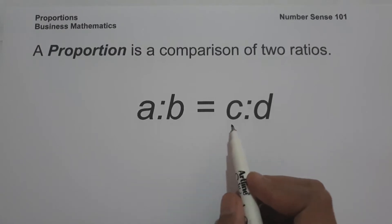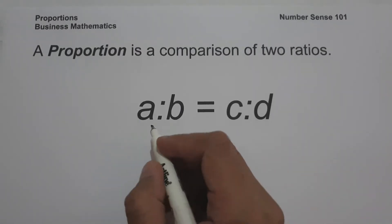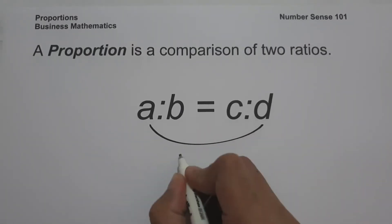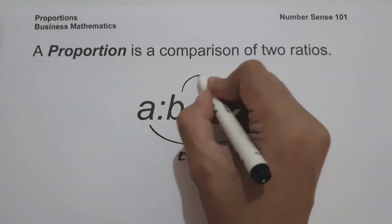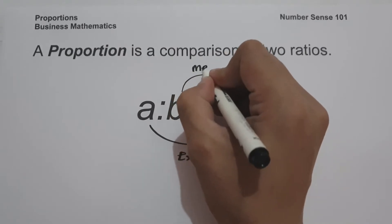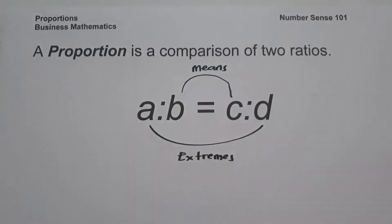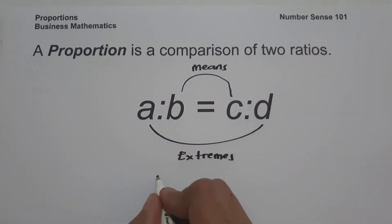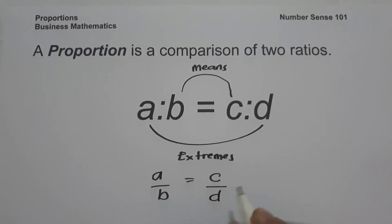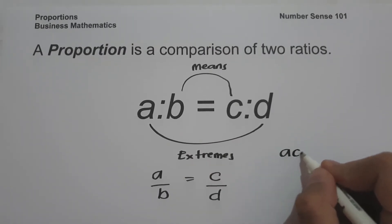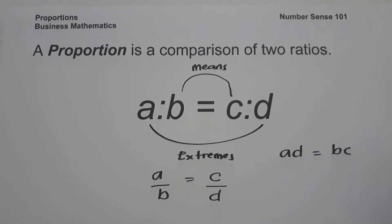The outer term is what we call the extremes, and the inner term is what we call the means. This form can be written as a over b equals c over d, and if you cross multiply, we get a times d equals b times c. These are the basic concepts you need to remember in order to understand proportions.